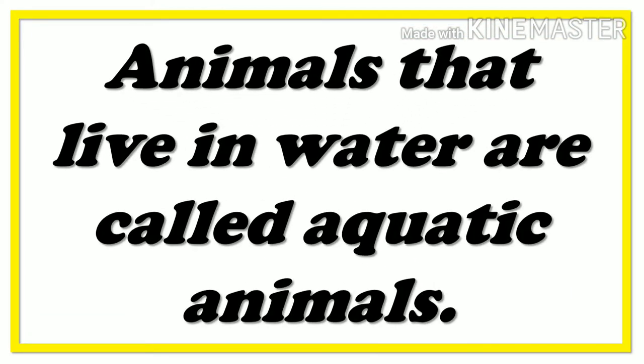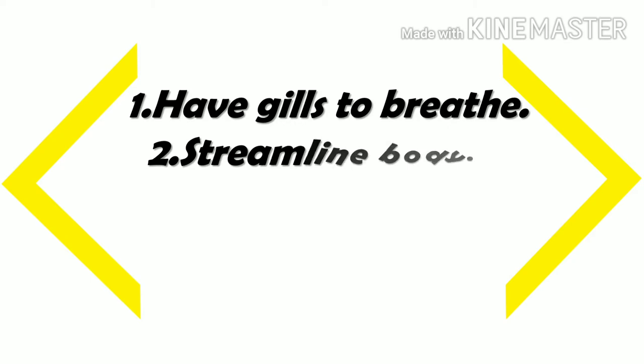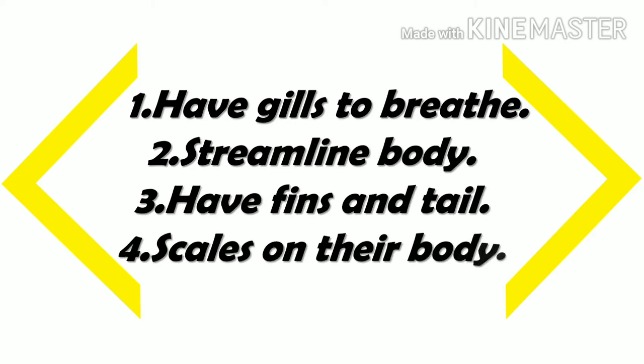Aquatic animals. Animals that live in water are called aquatic animals. Adaptation in animals in water. Fish: Fish have gills to breathe. They have a streamlined body, fins, tail, and scales. Fish have gills instead of lungs to breathe underwater. Their streamlined body cuts through the water easily; fins and tail help them move faster, the tail helps change direction, and scales protect their body.